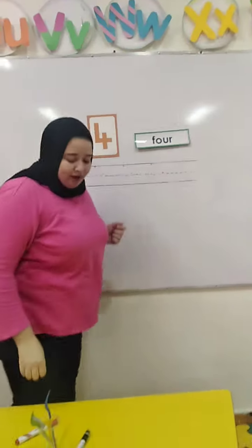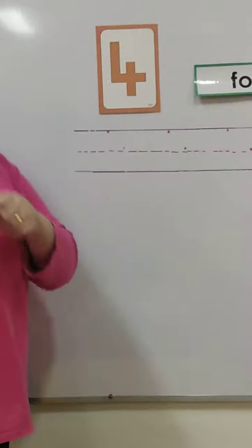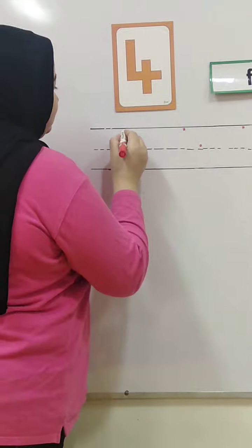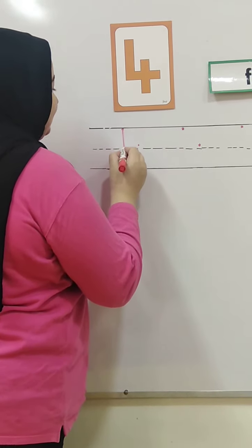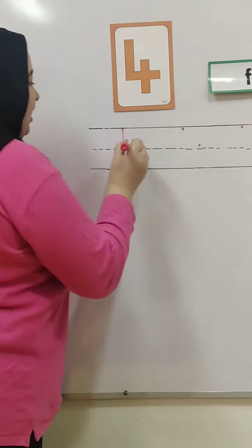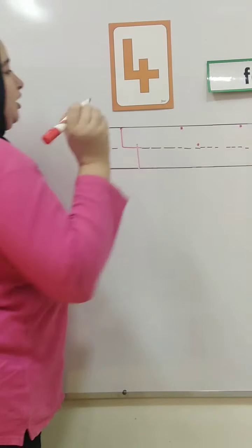Now, let's write number four. How do we write number four? Start from the dot, straight line down, dash on the line, take off your pencil, and another straight line.